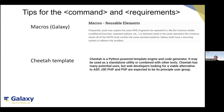Next, I want to introduce the Cheetah templates, because they are a big part of developing the wrapper. Cheetah is a Python-powered template engine and code generator. It may be used as a standalone utility or combined with other tools. Cheetah has many potential uses — web developers looking for alternatives to ASP, JSP, PHP, or PSP are among its principal user groups. This template is really functional and we use it in our wrapper.